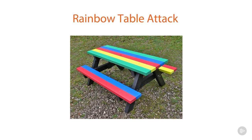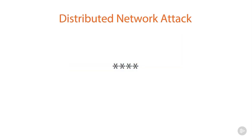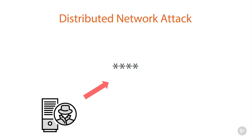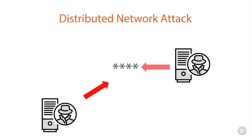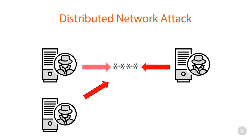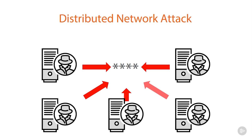Something else we can try is a DNA, or Distributed Network Attack. This is where we try to recover password-protected files using the unused processes from multiple machines we've already pwned on the network — they may be part of a botnet used to help decrypt the password.